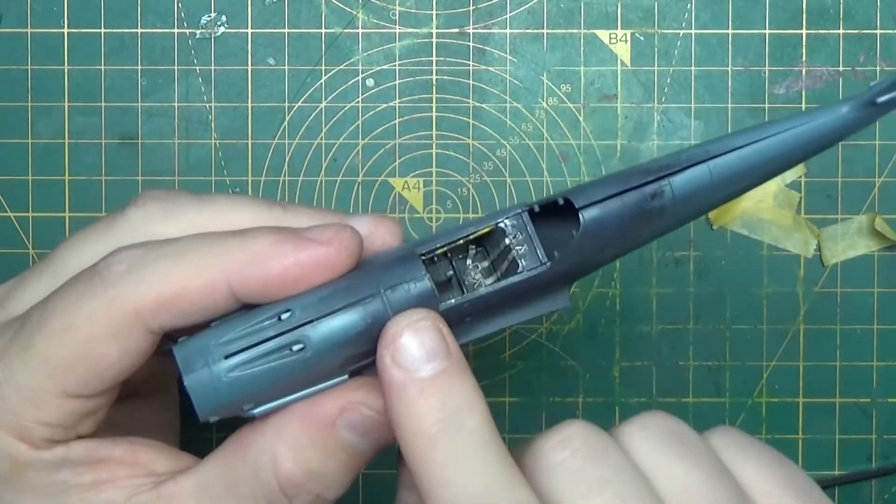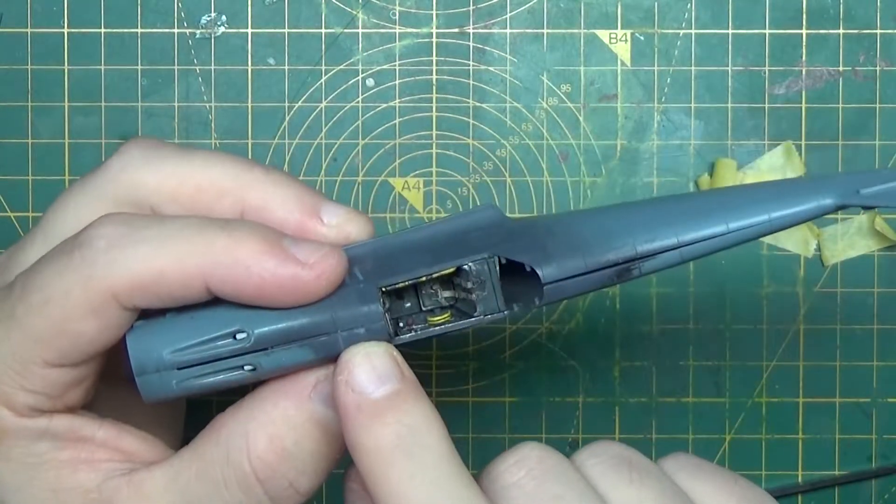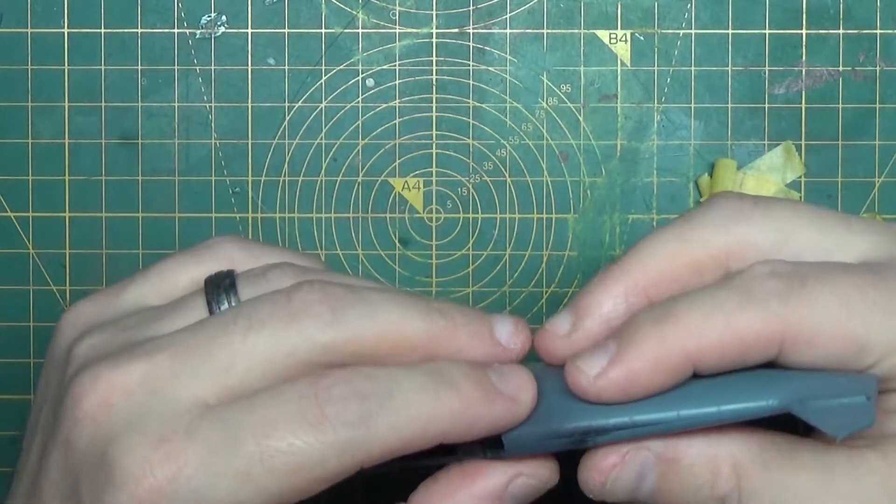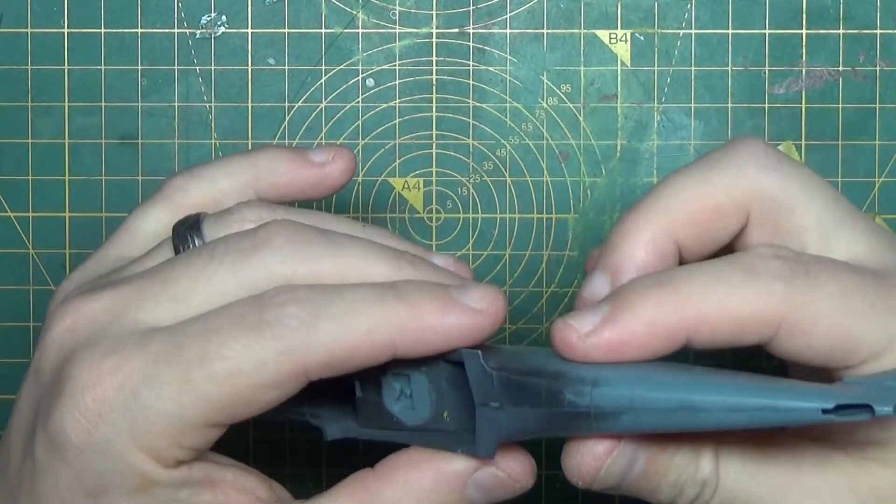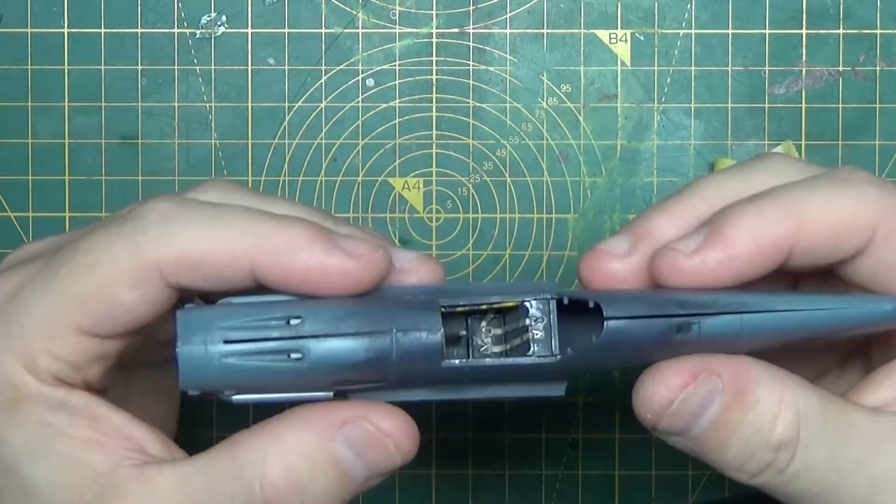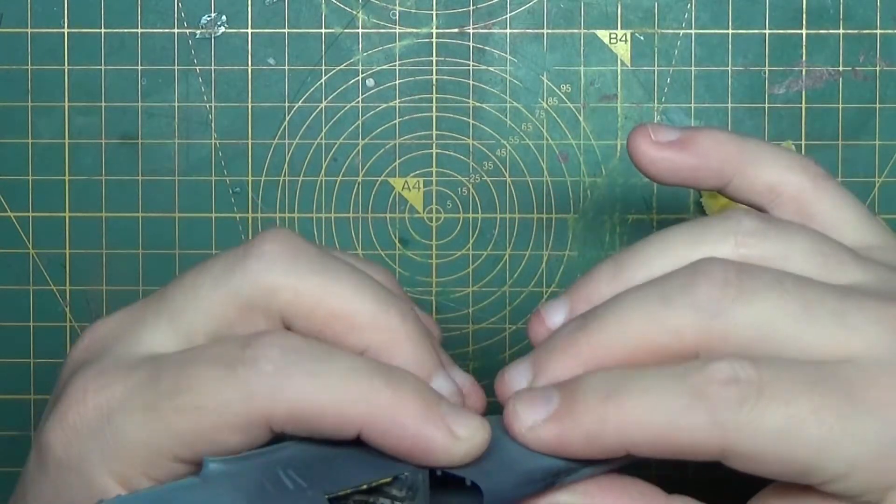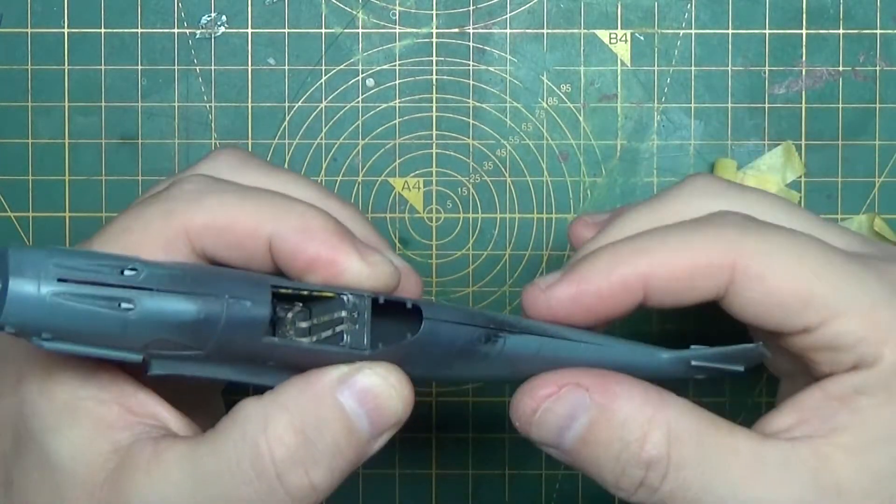Looks like this top section here may need a little bit of sprue goo or something like that. So I shall, I'm going to do the same again, I'm going to get some tape on there and I'm going to get this back piece on as well. So we'll be back very shortly.